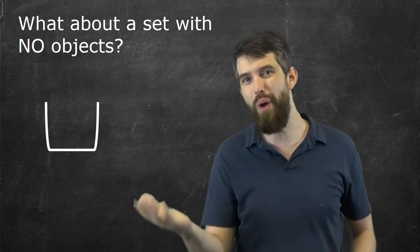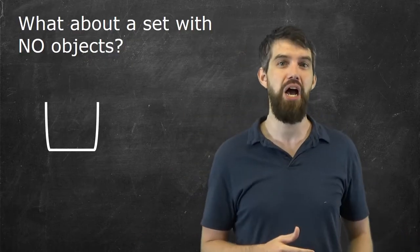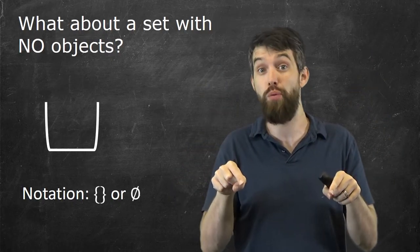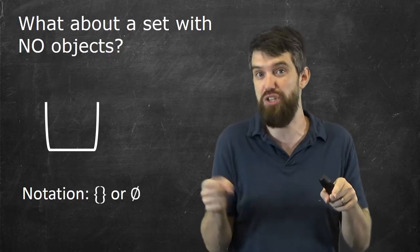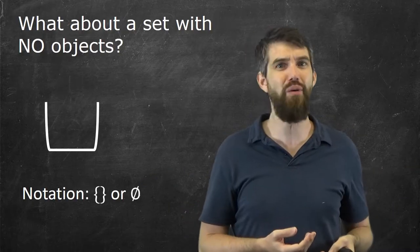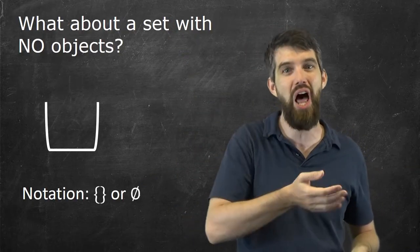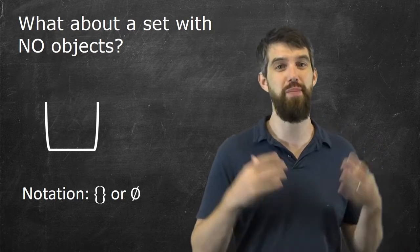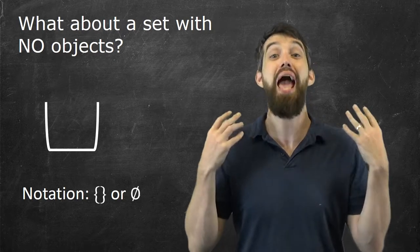Notationally, there are a couple different ways that are both standard to write this. One is just to note squiggly brackets, our normal set roster way of writing a set, but just put nothing inside of it—just two squiggly brackets with nothing in the middle. Otherwise, you can also write this sort of zero with a line through it. Both of these notations are standard ways to represent the empty set.